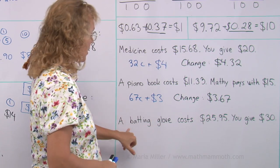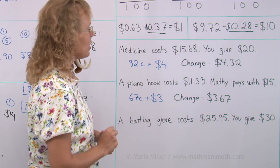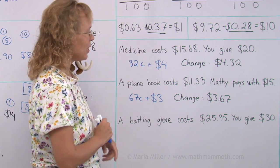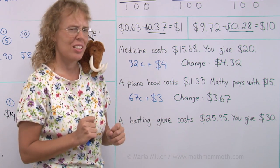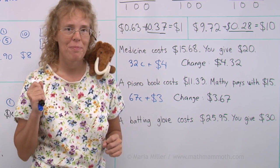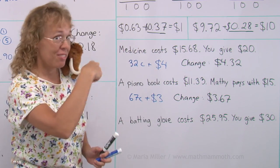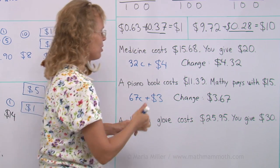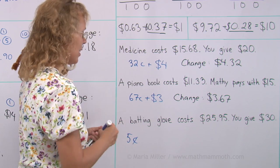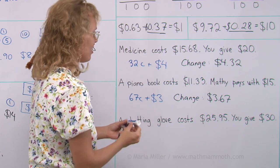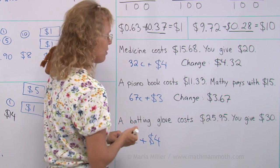And then lastly, a batting glove costs $25.95, and you give $30. Now this one is actually easier than the previous two problems. Can you tell me how much the change will be? We have 95 cents, so we only need 5 cents to go up to the next whole dollar. So 5 cents. And then we are at $26. So 4 more dollars after that. So the change is $4.05.